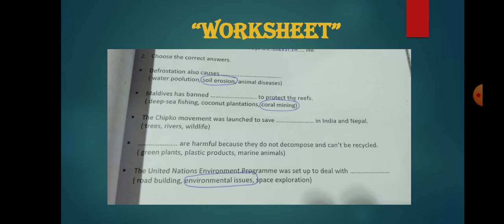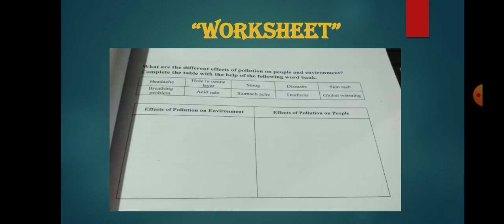Which is harmful because they do not decompose and can't be recycled - so you have to tell which things: green plants, plastic products, or marine animals. The United Nations Environment Program was set up to deal with environmental issues.